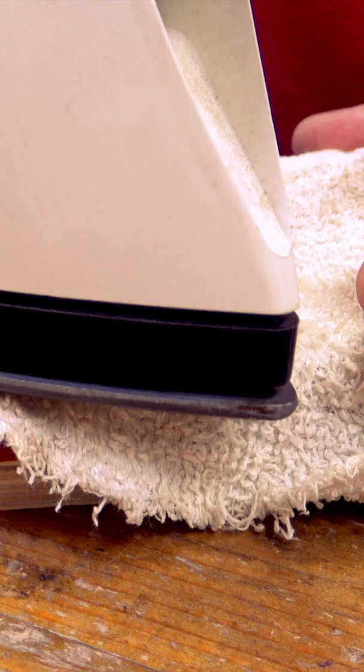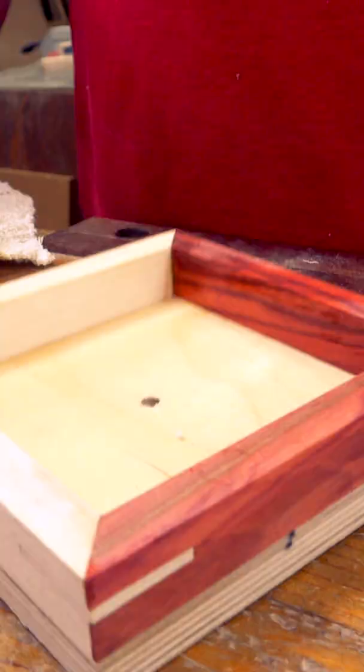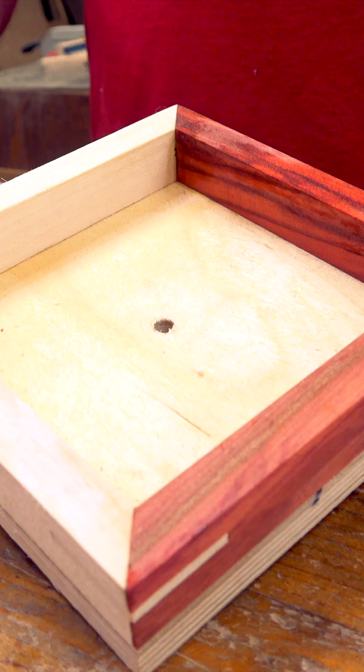Give it about 20 seconds to soak in and add a wet cloth over the top of it. Now with a clothes iron, slowly rub it over the surface.